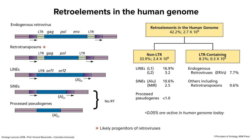Two key points: first, retrotransposons are probably the progenitors of retroviruses — they just needed an envelope glycoprotein to make particles and spread from cell to cell. Second, even though 42% of our genome is retro elements, less than 0.05% are actually active today and moving around, though they do occasionally cause human disease. The real question is why we keep them — they all appear to have interesting functions.